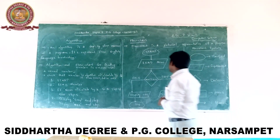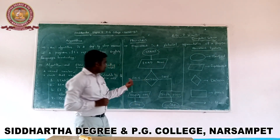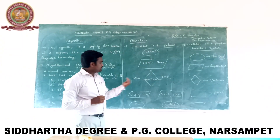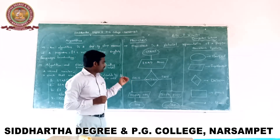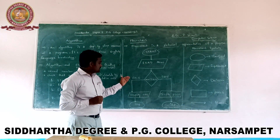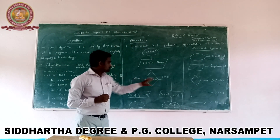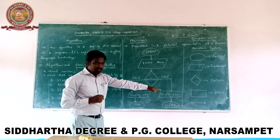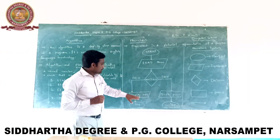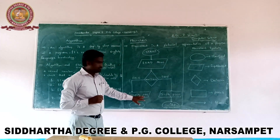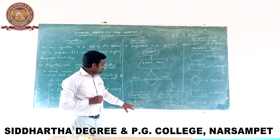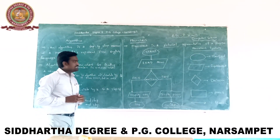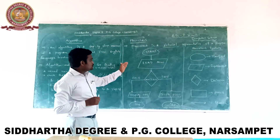On the left side is the false section. If the condition is not true, we go to the false section, which displays 'Odd'. Then we go to Stop. This completes the flowchart representation.